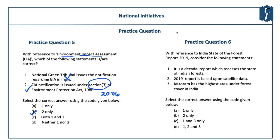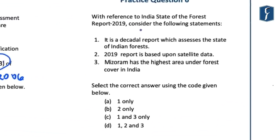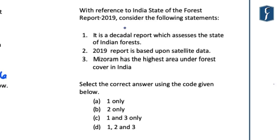The next question deals with India State of the Forest Report 2019. This report was published by the Forest Survey of India, which has been mandated to assess forest and tree resources of the country including wall-to-wall forest cover mapping. The question considers: Statement 1: it is a decadal report which assesses the state of Indian forests. This statement is incorrect — the report is biennial. Since 1987, 16 such reports have been published, the last one being published in 2017 and this one in 2019. So statement 1 is clearly wrong, and you can solve the question with this — leading to the right answer being 2 only.